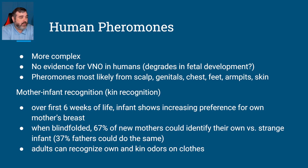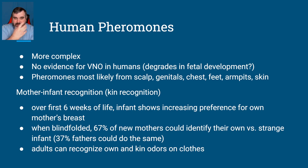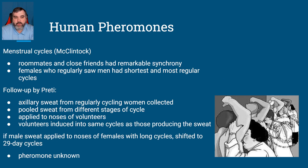Mother-infant recognition: over the first six weeks of life, there's an increase in the newborn's preference for the mother's breast. When blindfolded, two-thirds of moms could identify their own child versus a stranger. People talk about that new baby smell, and there is something to it that allows for that kin recognition. Adults can also recognize their own kin odors on clothes.